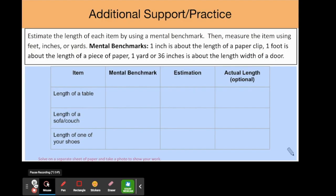Let's look at another example from today's lesson. Estimate the length of each item using a mental benchmark, then measure the item using feet, inches, or yards. Remember: 1 inch is about the length of a paper clip, 1 foot is about the length of a piece of paper, and 1 yard or 36 inches is about the width of a door.